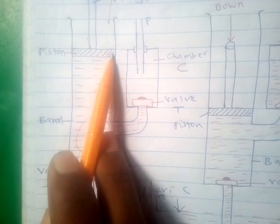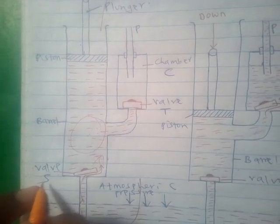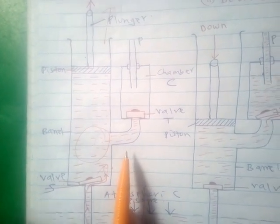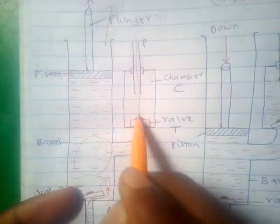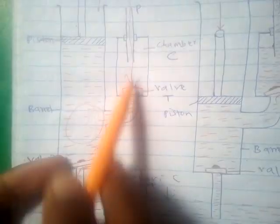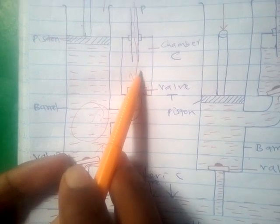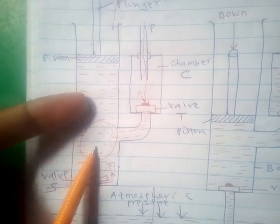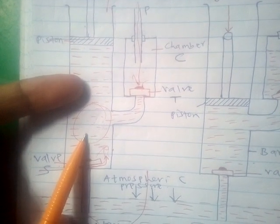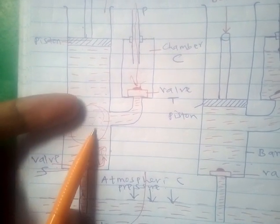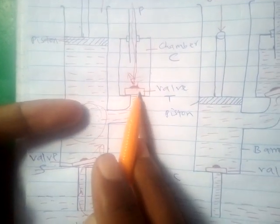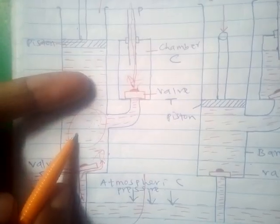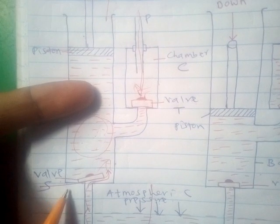The process of moving the plunger up and down continues until water fills the region between valve S and the piston. Meanwhile, valve T does not open because the atmospheric pressure acting from above is still greater than the low pressure of the expanded air inside the barrel.